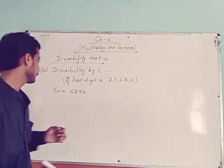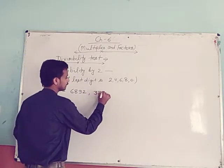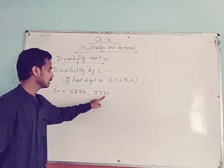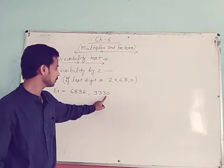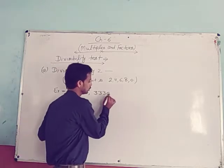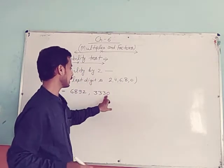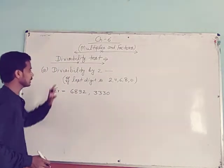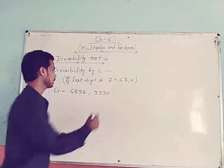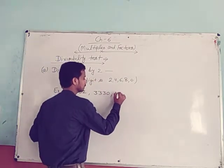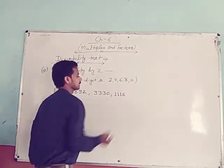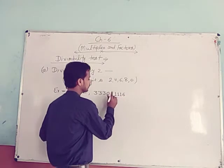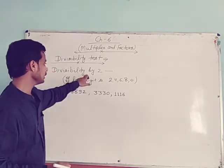Another example: 33330. All the digits are odd numbers, but the last digit is 0. And you know that if 0 is the last digit, then the given number is divisible by 2. Take another number: 11116. The last digit is 6 again, so this number is also divisible by 2.